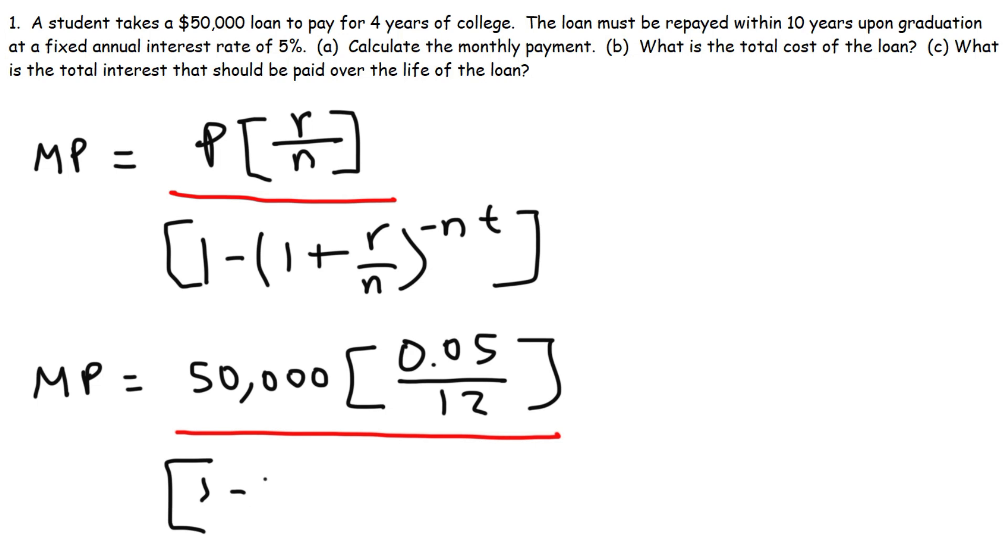Now let's plug in everything else. So we have R again, that's 0.05, N is 12. Raised to the negative N, so that's negative 12. T is in years. So we're dealing with a loan that has to be repaid in 10 years. So T is going to be 10. So once we plug this entire thing in, it's going to give us the answer that we're looking for.